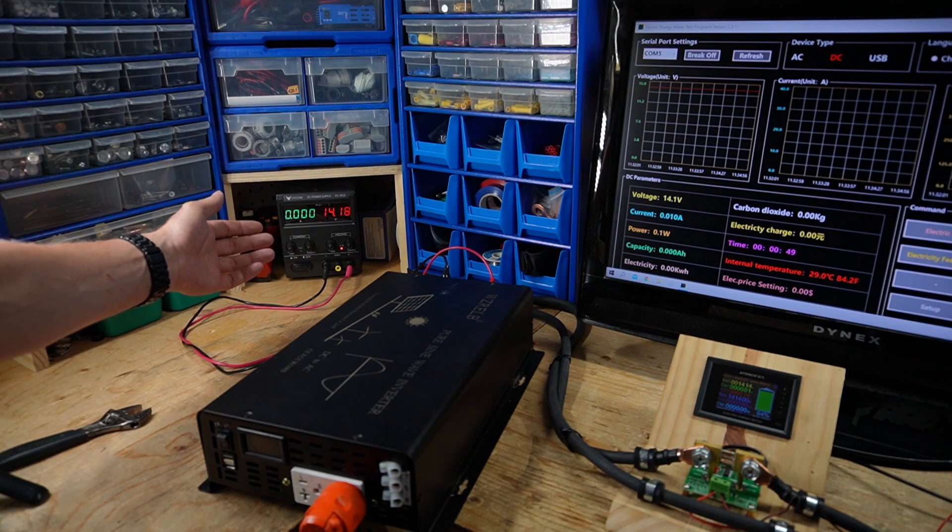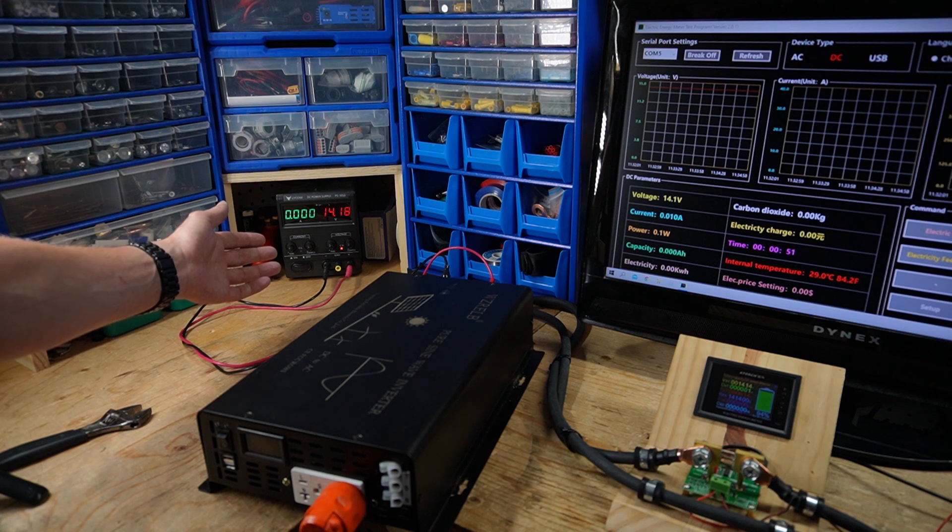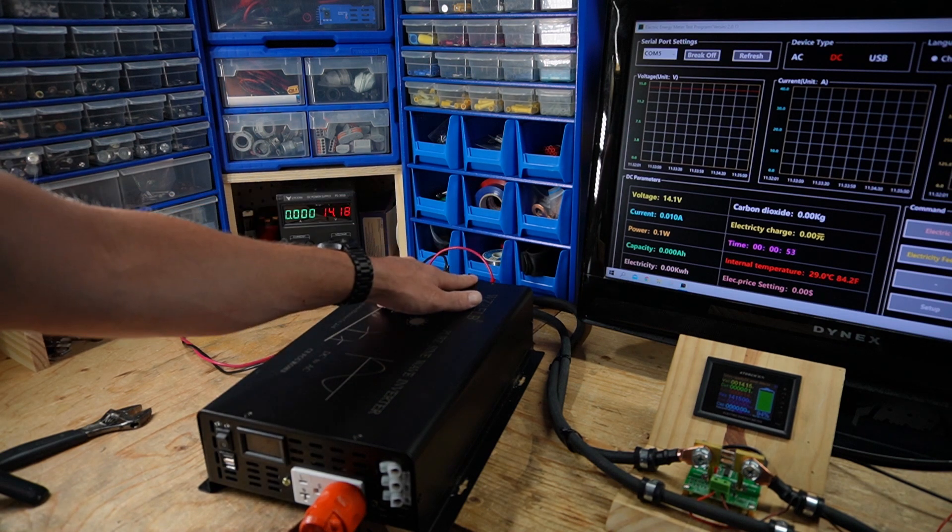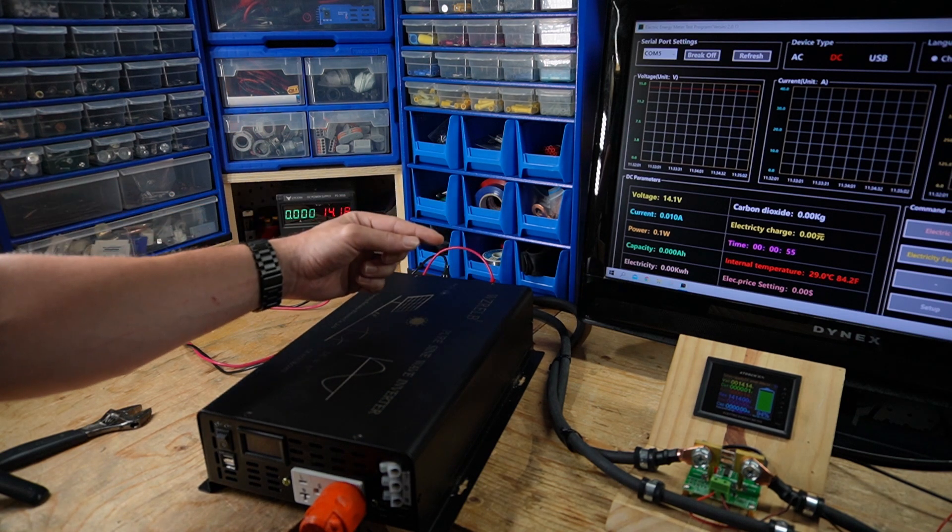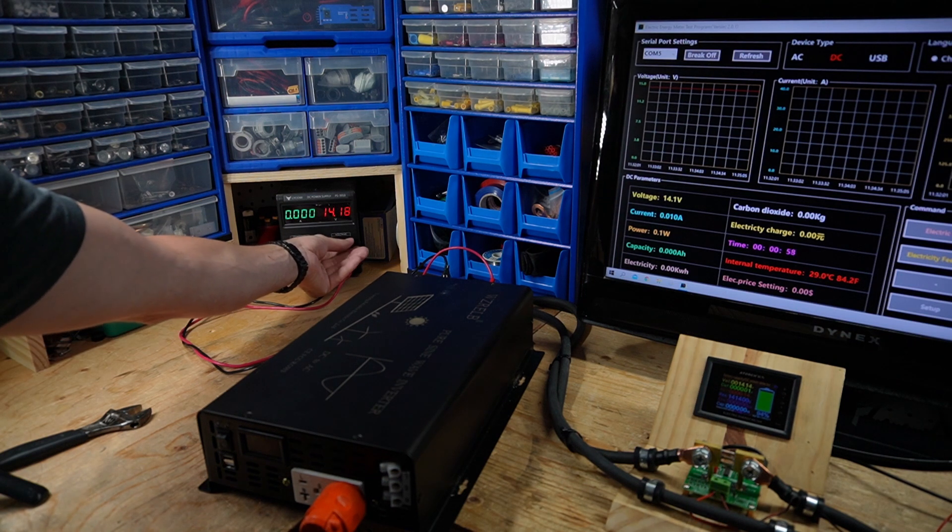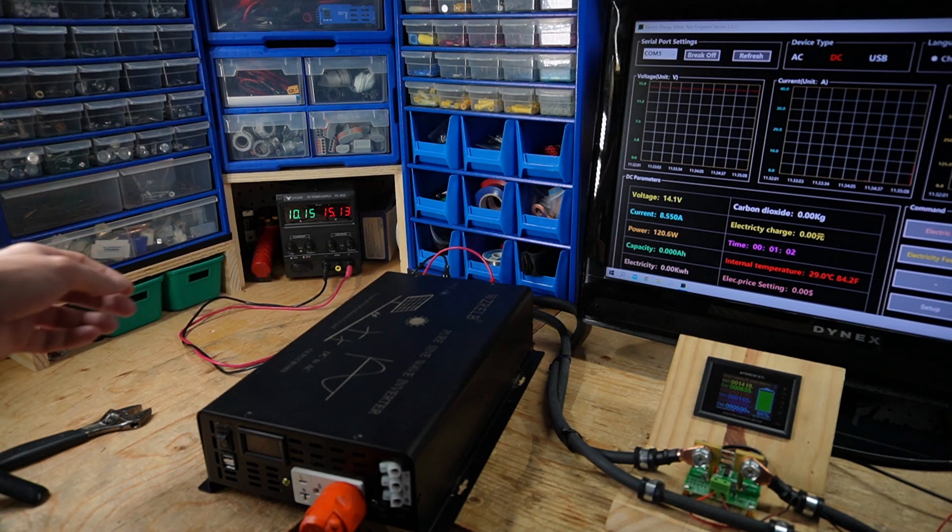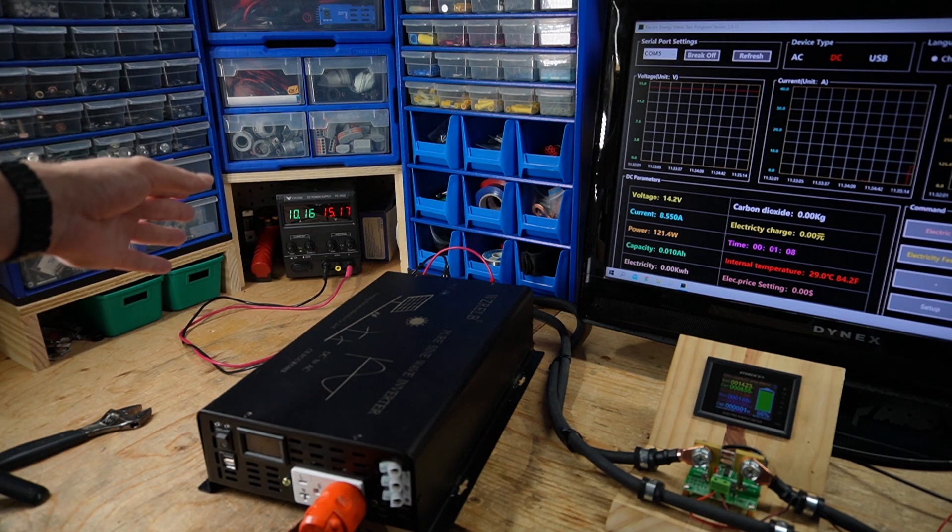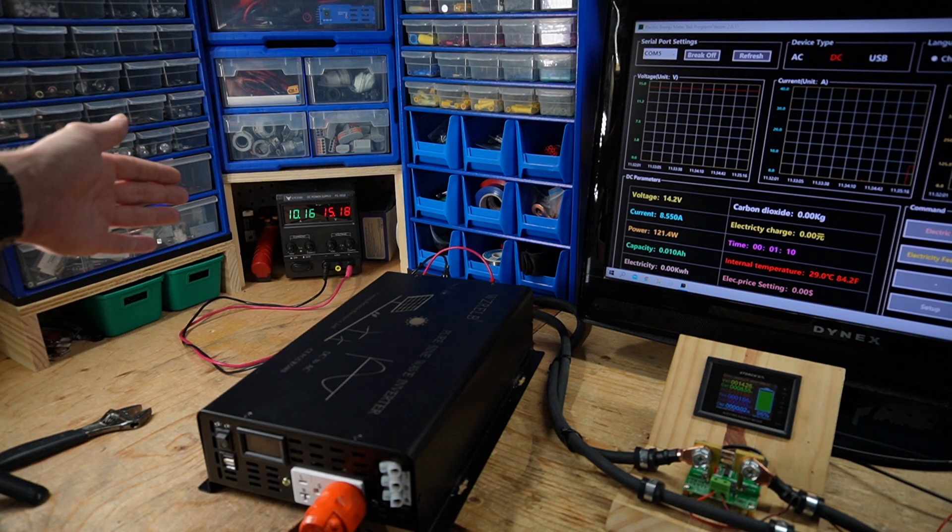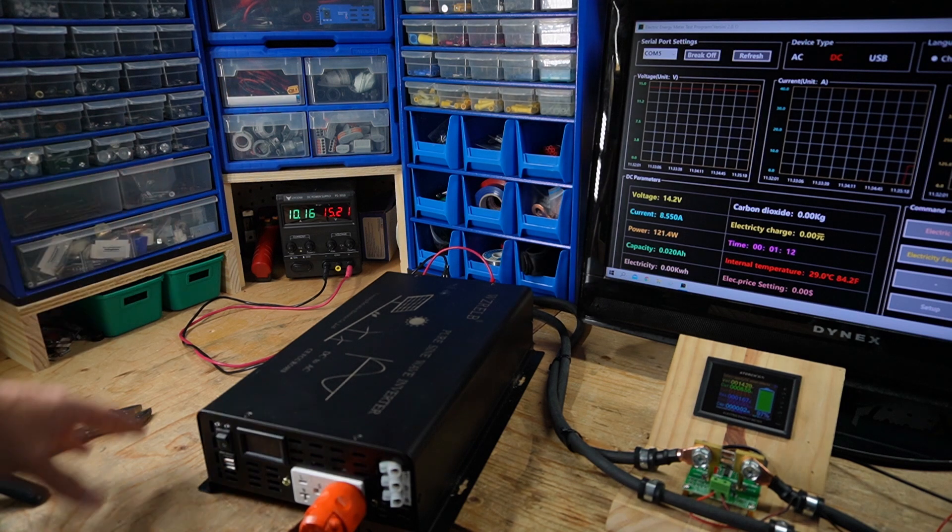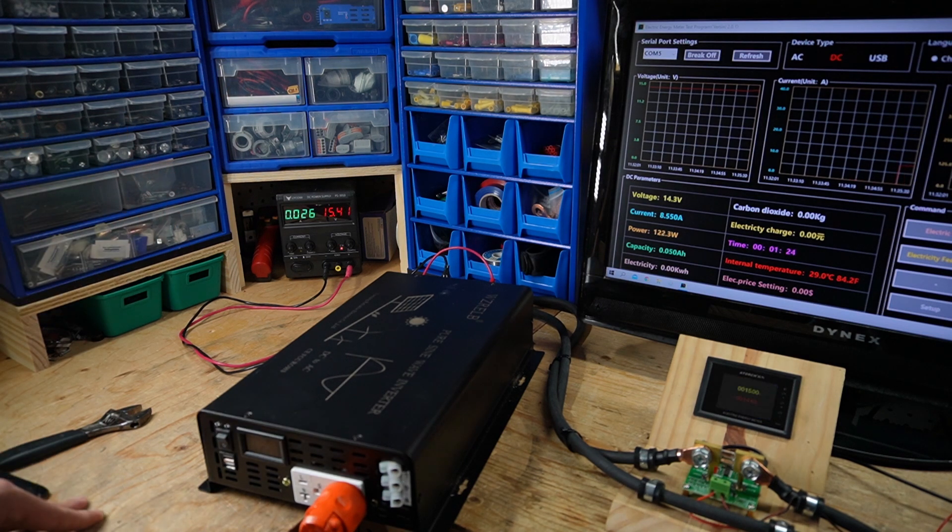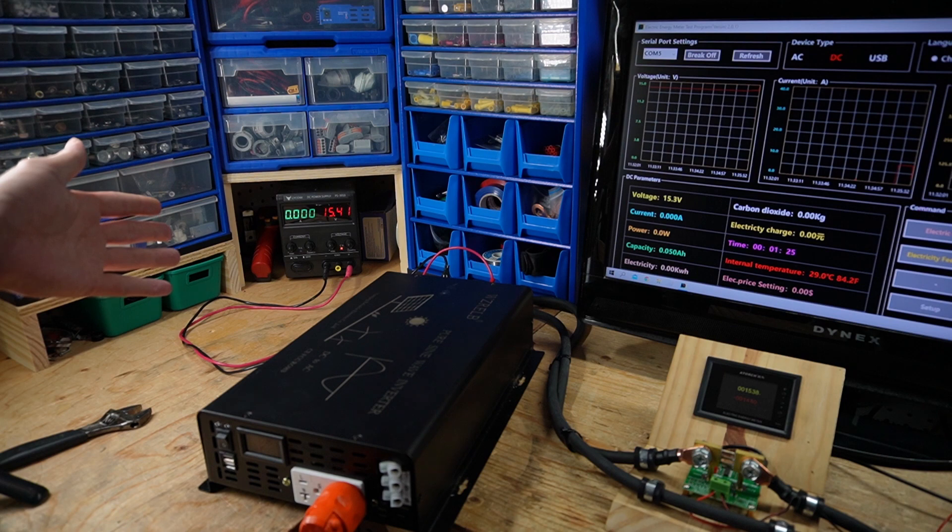Now before I begin my test, I want to do an over-voltage protection test. I have the two leads into the back of the inverter, which is connected to the battery, and we will crank up the charging. Right now I'm charging 15 volts, 10 amps. We'll give this a few seconds and see if it disconnects. And there we go, we have over-voltage protection.